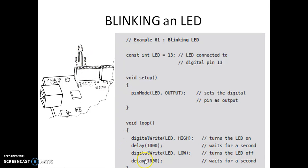If you want to change the duty cycle, you change the delay time. So in summary: we assign 13 to LED, LED is identified as pin 13 because it is connected there, we specify it as output using pinMode(LED, OUTPUT), and then write the actual program using digitalWrite and delay.